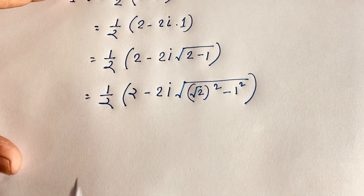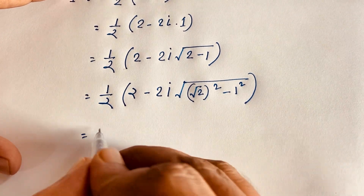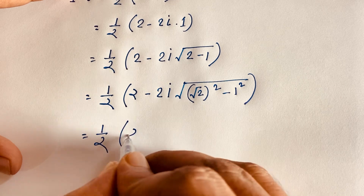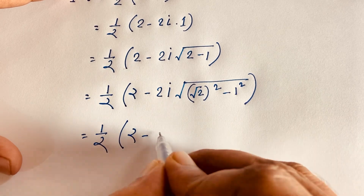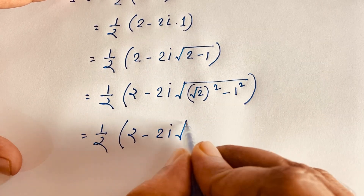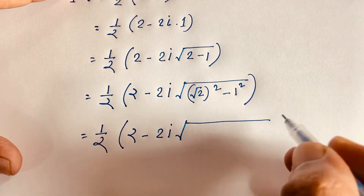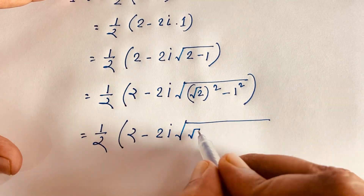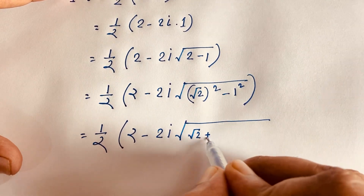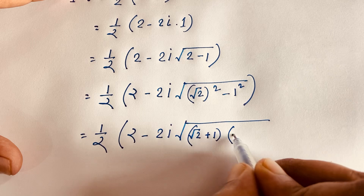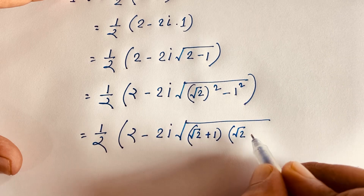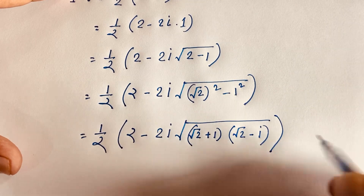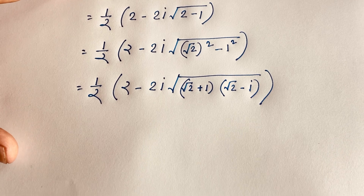You can see it will be 1 over 2 times (2 minus 2i). Now I apply the identity a² minus b² equals (a plus b)(a minus b).